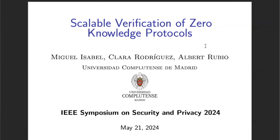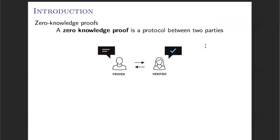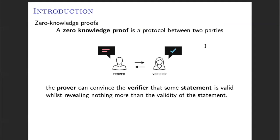First, I want to introduce the problem that we address in our work. Zero Knowledge Protocols are a kind of cryptographic protocols where there are two different parties, the prover and the verifier. In these protocols, the prover wants to convince the verifier about the validity of a statement without revealing any extra information beyond the fact that the statement is true.